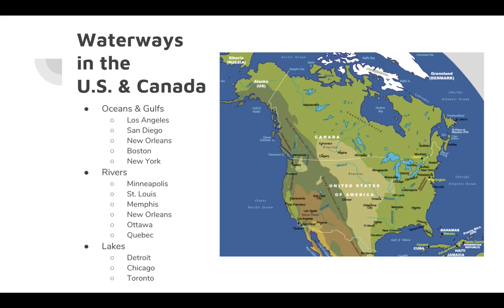The cities I listed include Los Angeles, San Diego, New Orleans, Boston, and New York — these are all port cities where most of the goods traded with the United States come in. Along our rivers, Minneapolis, St. Louis, Memphis, and New Orleans serve as key hubs. Farm products created in the Great Plains can go through the Missouri River and Mississippi River and down through the port of New Orleans to be traded elsewhere.